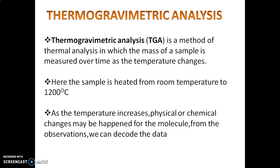Thermogravimetric analysis, or TGA, is a method of thermal analysis in which the mass of the sample is measured over time as the temperature changes. We are providing a temperature challenge to a component, and whatever chemical or physical changes happen, there is a chance of getting changes in mass.